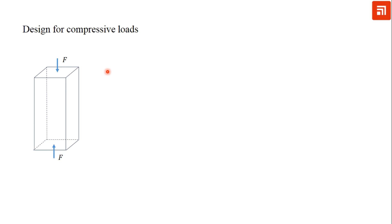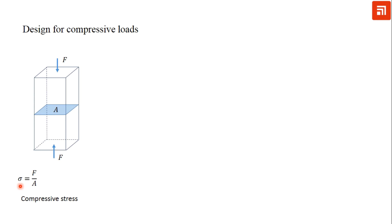Let us take a simple case of a bar subjected to compressive load F. If the cross-section of this bar is A, the stress induced can be found using F divided by A, and in this case the stress is known as compressive stress. The design stress in compression is obtained by using yield strength in compression divided by factor of safety.